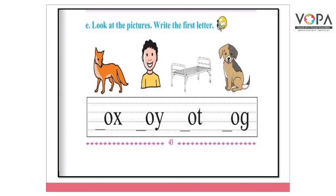यही activity बच्चों आपको आपकी English textbook में पेज नंबर 43 पर दी गई है। बच्चों आप देख रहे होंगे कि ऊपर तसावीर दी गई हैं और नीचे जो words हैं उनके first letter missing हैं। तो बच्चों आपको उनका first letter यहाँ पर pencil की मदद से लिखना है और इस activity को complete करके अपने teacher को दिखाना है। Thank you।